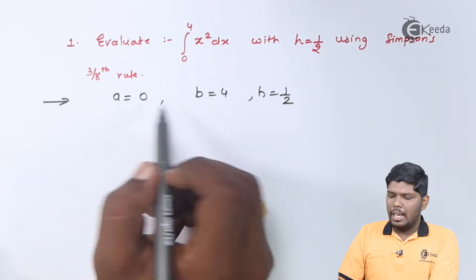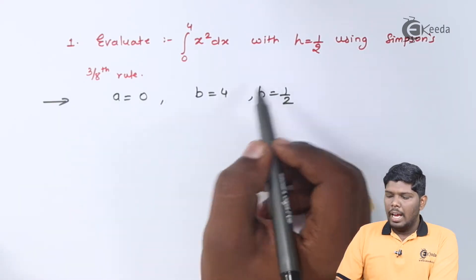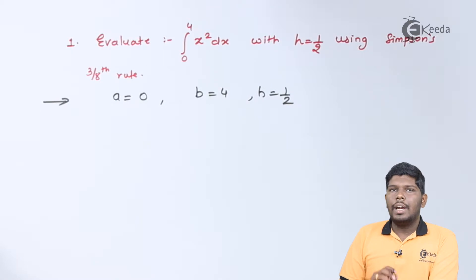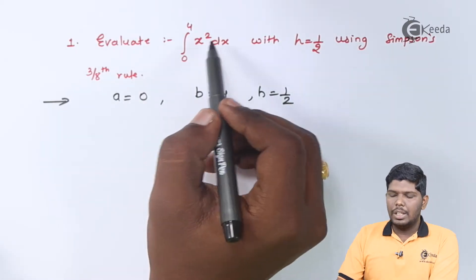Here, lower and upper limits are a and b, that is 0 and 4, and h is directly given. So we can directly prepare the table of x and y, where y will be the given function, that is x squared.